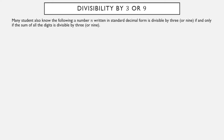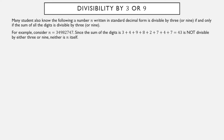Divisibility by 3 or 9 has a nice trick. A number n written in standard decimal form is divisible by 3 if and only if the sum of all of its digits is divisible by 3, and it's divisible by 9 if and only if the sum of all of its digits is also divisible by 9. For example, consider n = 34,982,747. Is it divisible by 3 or 9? The sum of the digits is 3+4+9+8+2+7+4+7 = 43. That's a much smaller number, and I can easily see that 43 is not divisible by 3 or 9. Therefore, the original number n is also not divisible by 3 or 9.